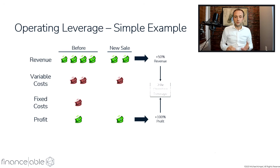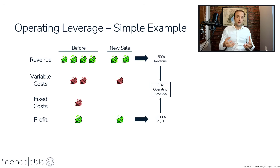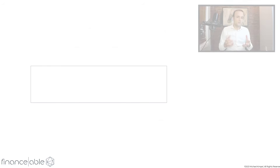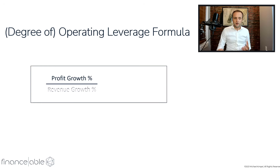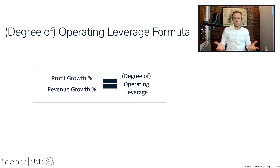More formally, we can look at the relationship between the 100% increase in profit and the 50% increase in revenue, and say that this business has two times operating leverage. This boils down to a formula called either the degree of operating leverage formula or the operating leverage formula — either way, it's the same idea. What we're looking at in this formula is the profit growth percentage divided by the revenue growth percentage — the change in profit relative to the change in revenue. This gives us operating leverage, and it's asking: how fast does profit grow relative to each unit of growth in revenues?